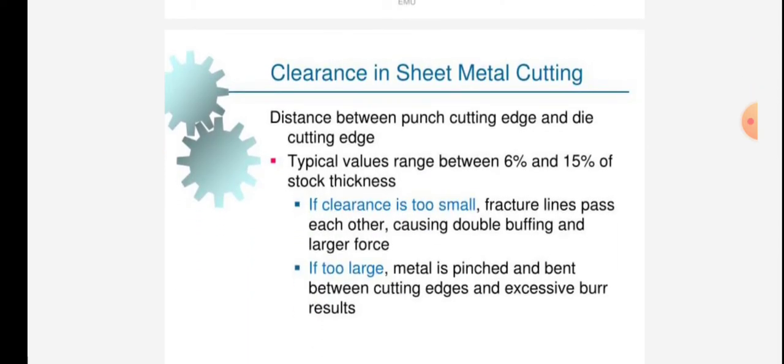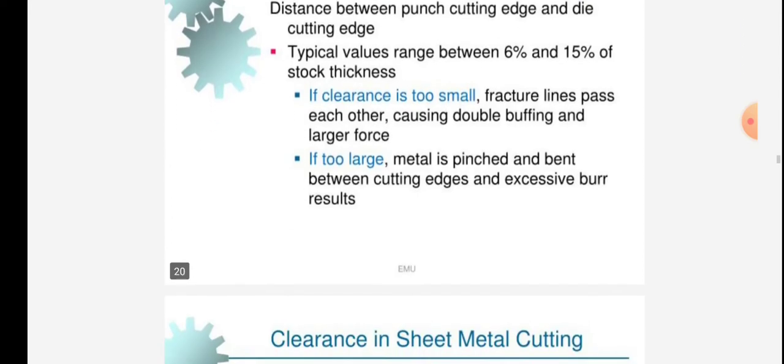Clearance in sheet metal cutting: distance between punch cutting edge and die cutting edge, typical values range between 6% and 15% of stock thickness. If clearance is too small, fracture lines pass each other causing double buffing and larger force. If too large, metal is pinched and bent between cutting edges and excessive burr results.